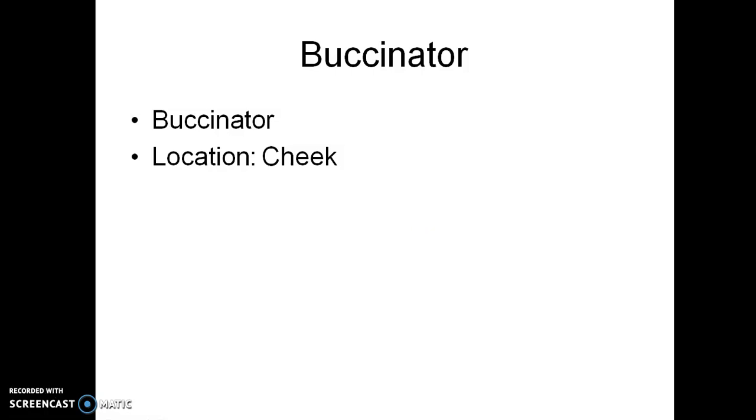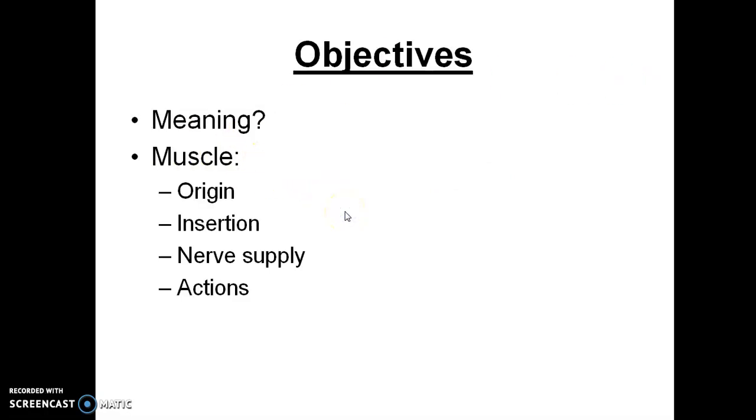It's called the buccinator which helps in blowing or whistling. The buccinator's location is present in the cheek. Cheek is the area by the side of the lips and nose.